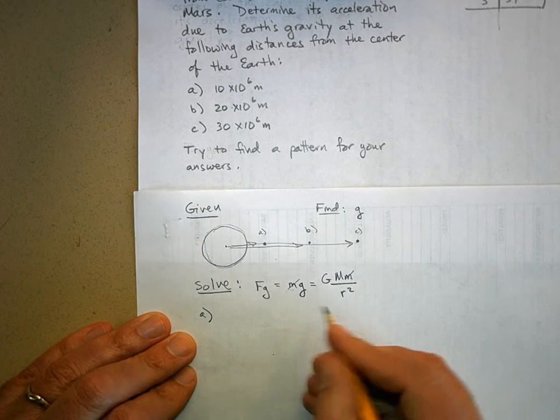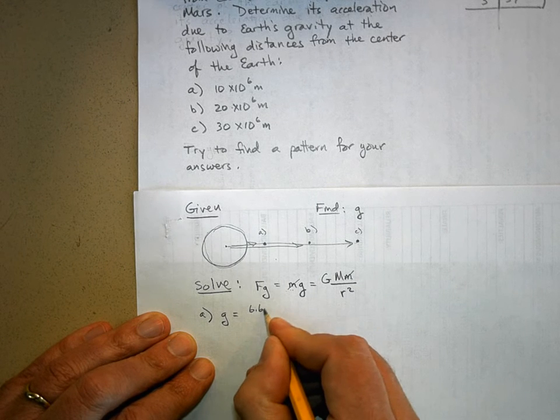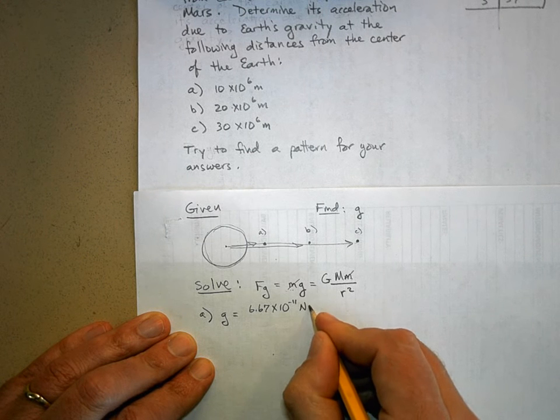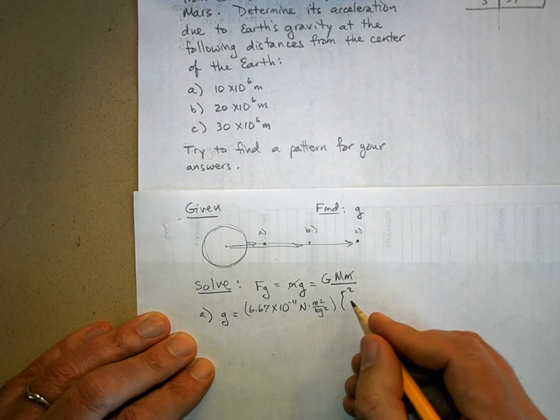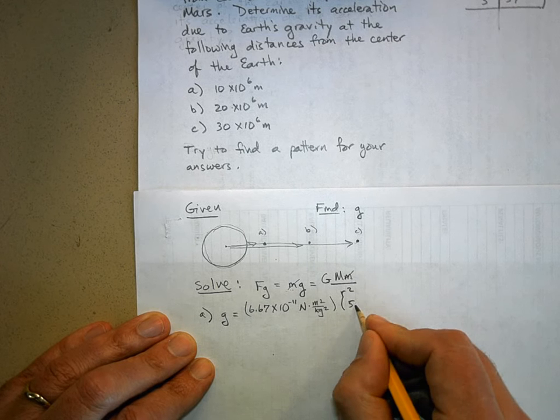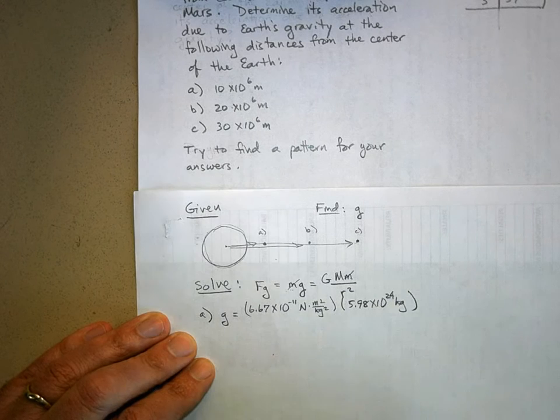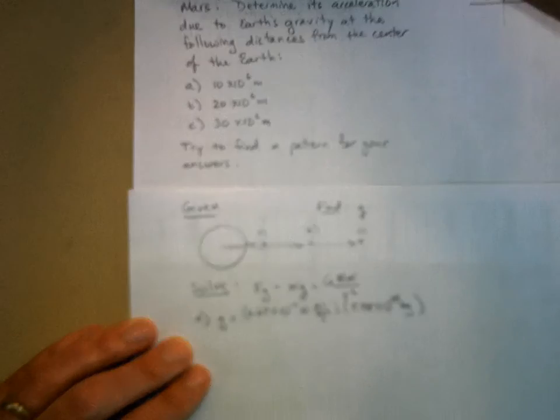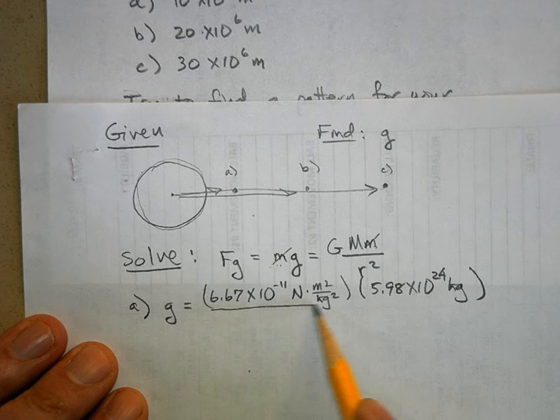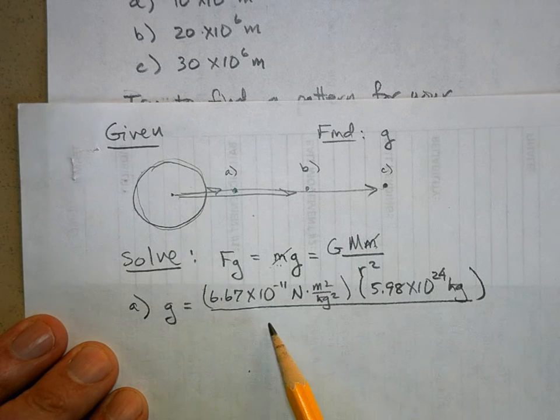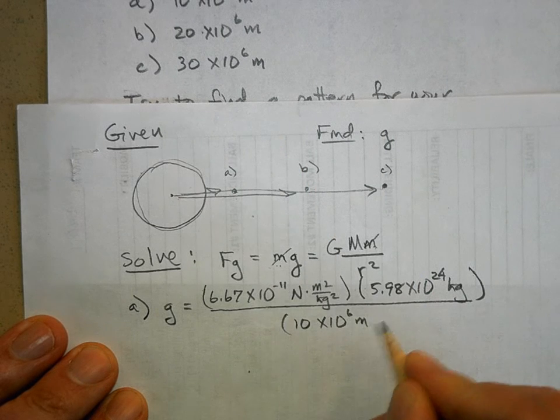For part A, g equals big G, which is 6.67 times 10 to the negative 11 Newton meters squared per kilogram squared, times the mass of the Earth, which is 5.98 times 10 to the 24 kilograms. Then we're going to divide it by r squared, and for part A, r squared is 10 times 10 to the 6 meters.